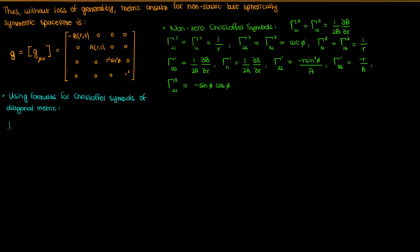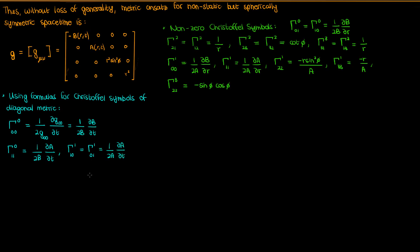The first additional nonzero Christoffel symbol is Γ⁰₀₀. Using the formula for Christoffel symbols of a diagonal metric, this equals 1/(2B) times the partial of B with respect to T. We can use similar formulas to get Γ⁰₁₁ and Γ¹₁₀, which equals Γ¹₀₁ since the Christoffel symbol is symmetric in the lower two indices. To be clear: index 0 is for T, 1 is for R, 2 is for theta, and 3 is for phi. All together we have 17 nonzero Christoffel symbols, as opposed to 13 for the static metric ansatz.